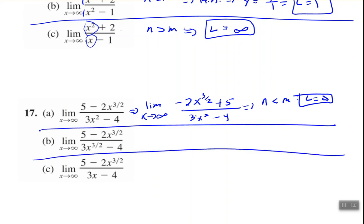Here on the second one, we have 3 halves and 3 halves, so the degrees are equal to each other — n equals m. When the degrees are equal to each other, the limit, just like the horizontal asymptote, is the ratio of the leading coefficients. If you look above, you see the leading coefficients are negative 2 and 3. So the limit equals negative 2 over 3. That would also be the horizontal asymptote.